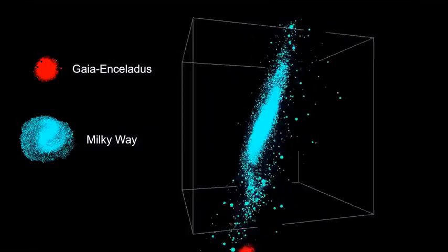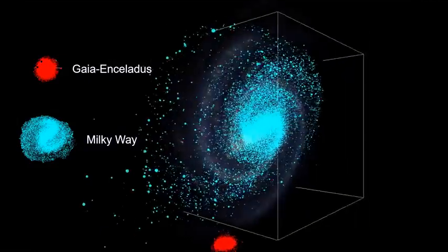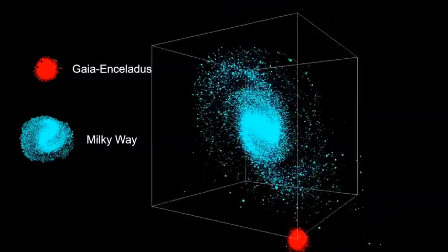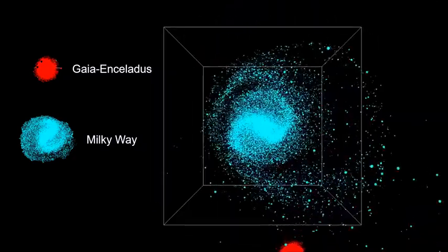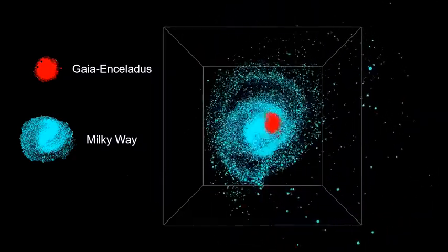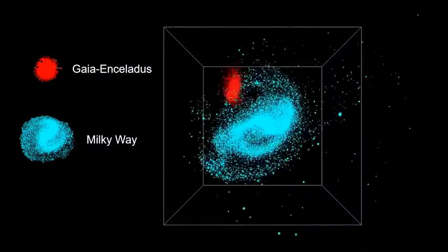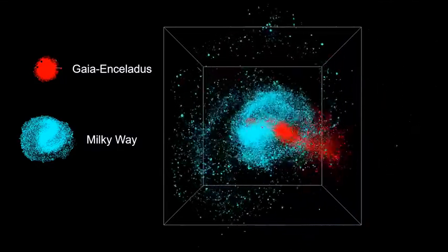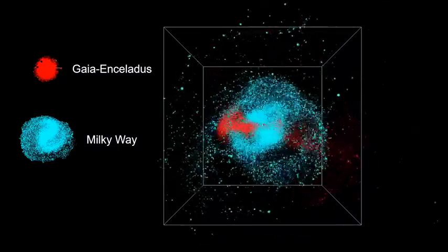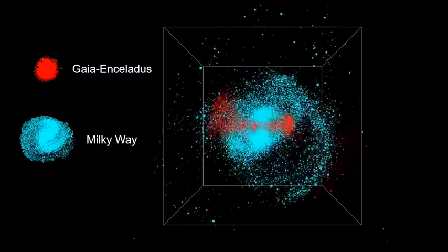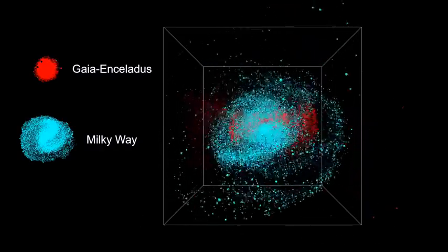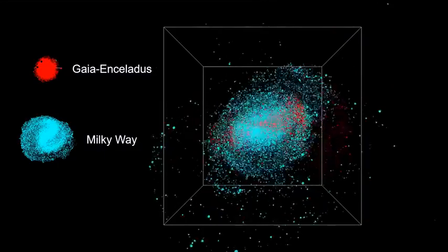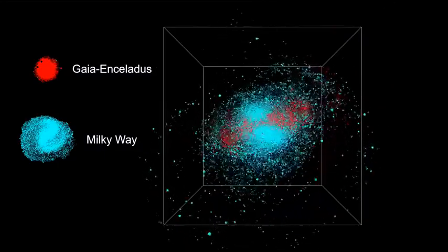Star motions and composition profiles indicated that these stars came from a different galaxy — they call this new galaxy Gaia Enceladus. Using computer models for galaxy collisions, they estimated that it collided with the Milky Way around 10 billion years ago. This is a computer simulation of the merger. Here we see that Gaia Enceladus is now our galaxy's inner halo.